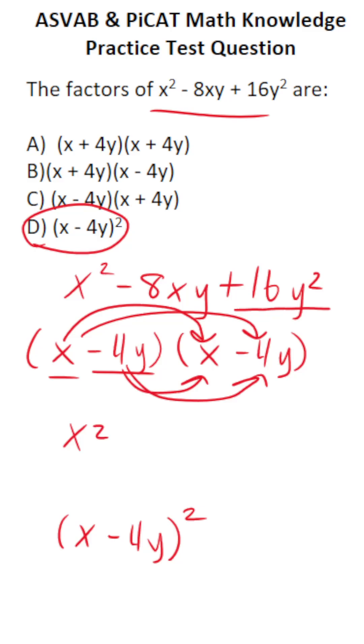x times x is x squared. x times negative 4y is negative 4xy. Negative 4y times x is negative 4xy. And finally, negative 4y times negative 4y is plus 16y squared.